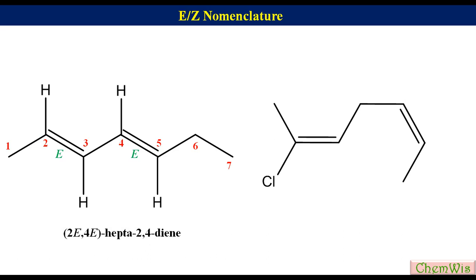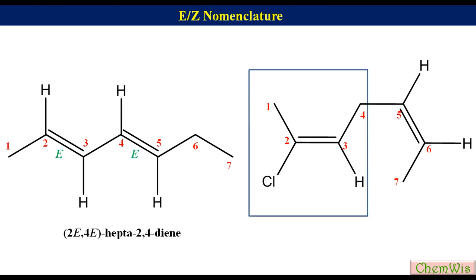Let's have another example. In this diene the position of alkenes is the same from both sides. Numbering will start from the left side because it gives a lower number to the chloro substituent. So the numbering will be: 1, 2, 3, 4, 5, 6 and 7. Now put the hidden hydrogens on C3, C5 and C6 for clarity. For the C2-C3 double bond: on C2 priority of chloro is 1 while methyl is 2; on C3 priority of the allyl residue is 1 while H is 2. Since higher priority groups are on opposite sides, the configuration is E.